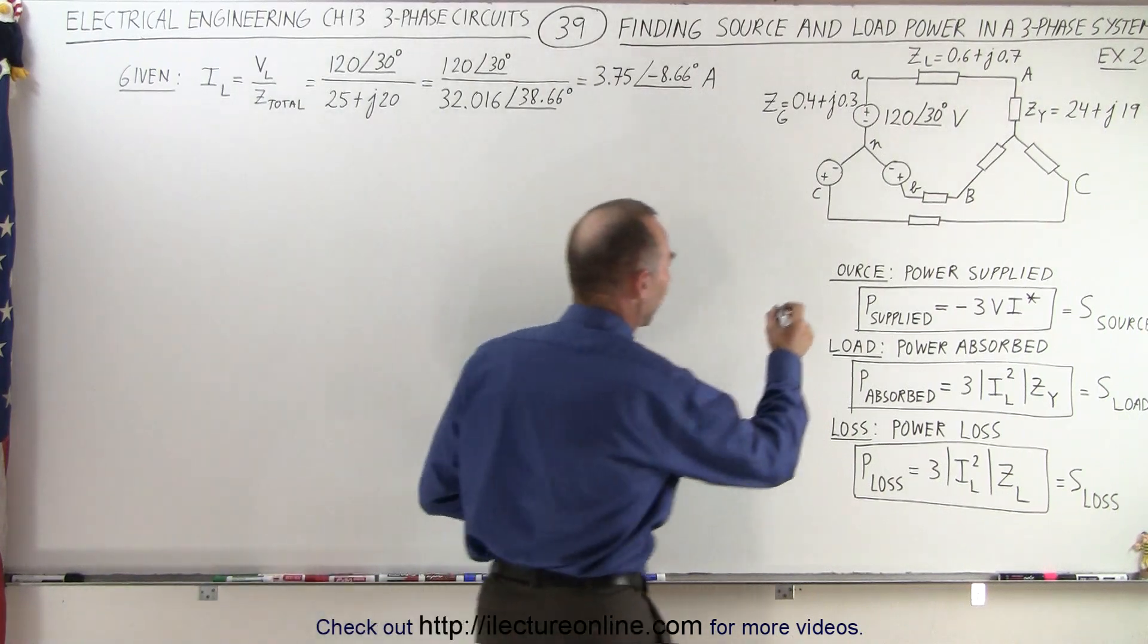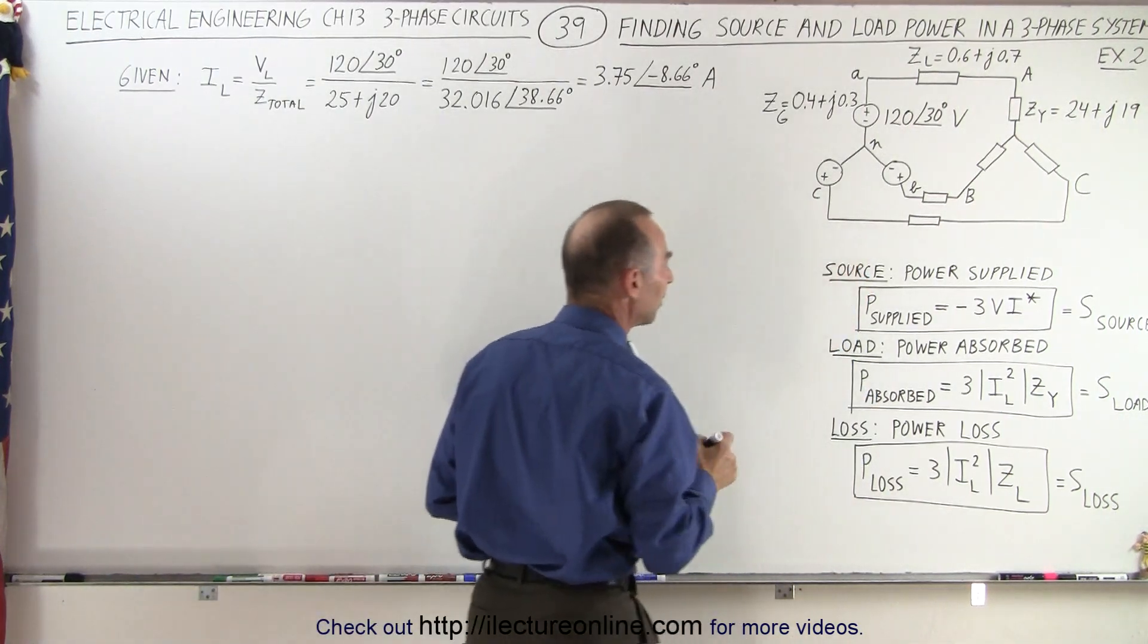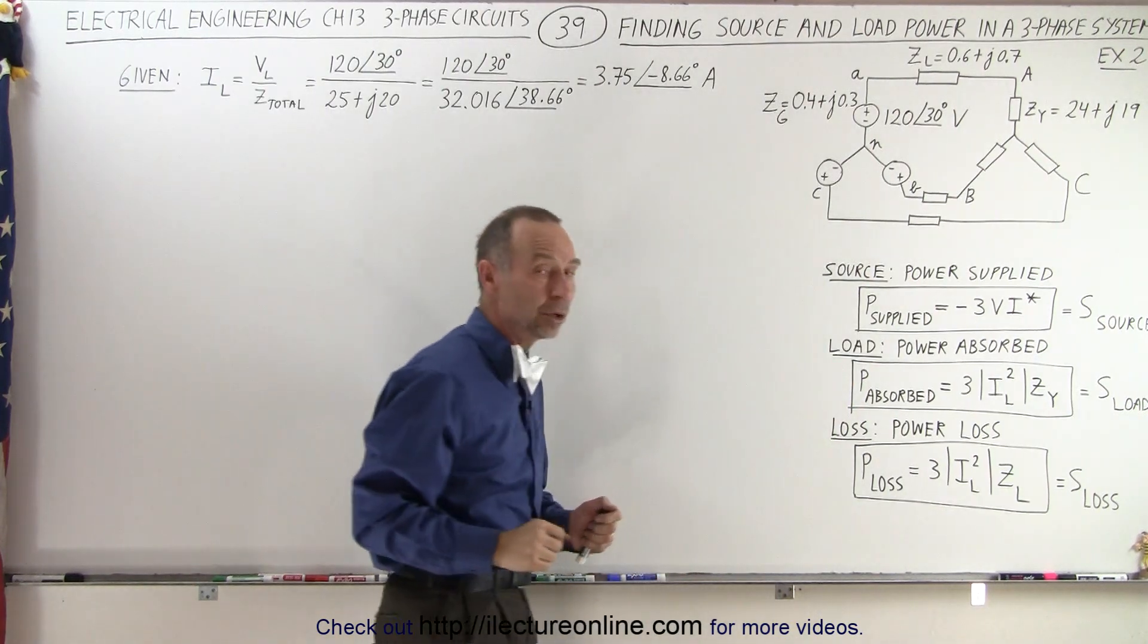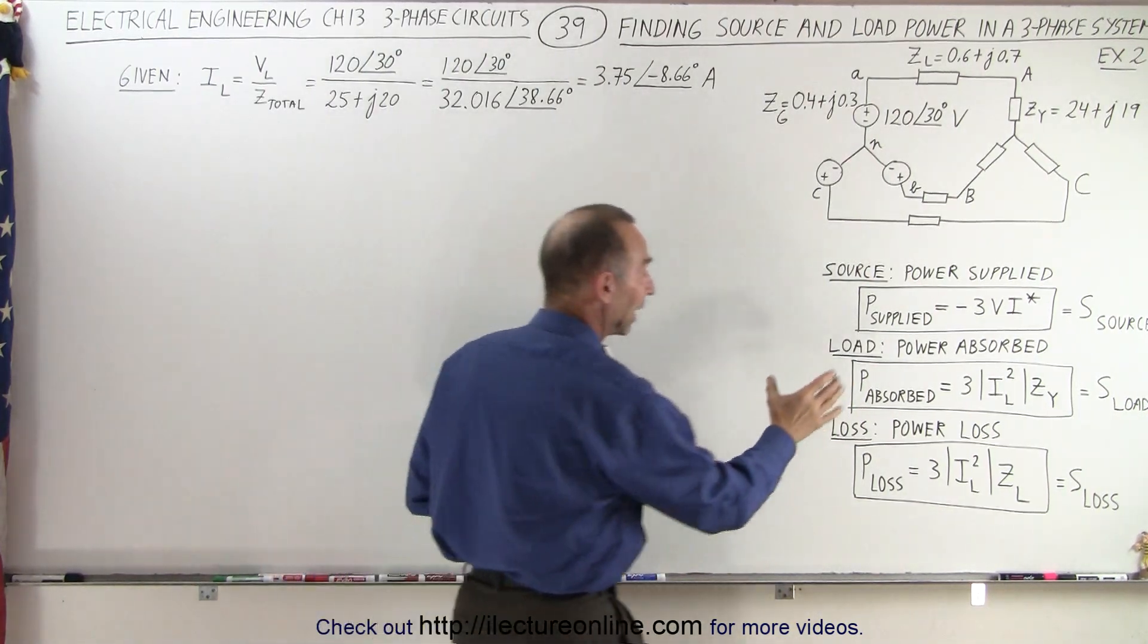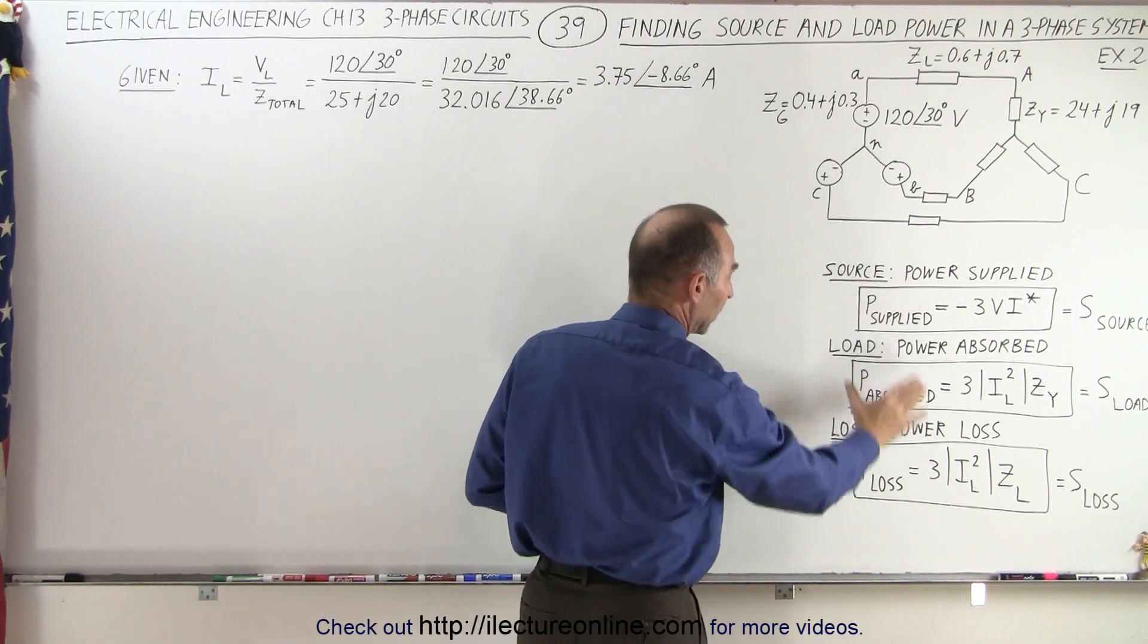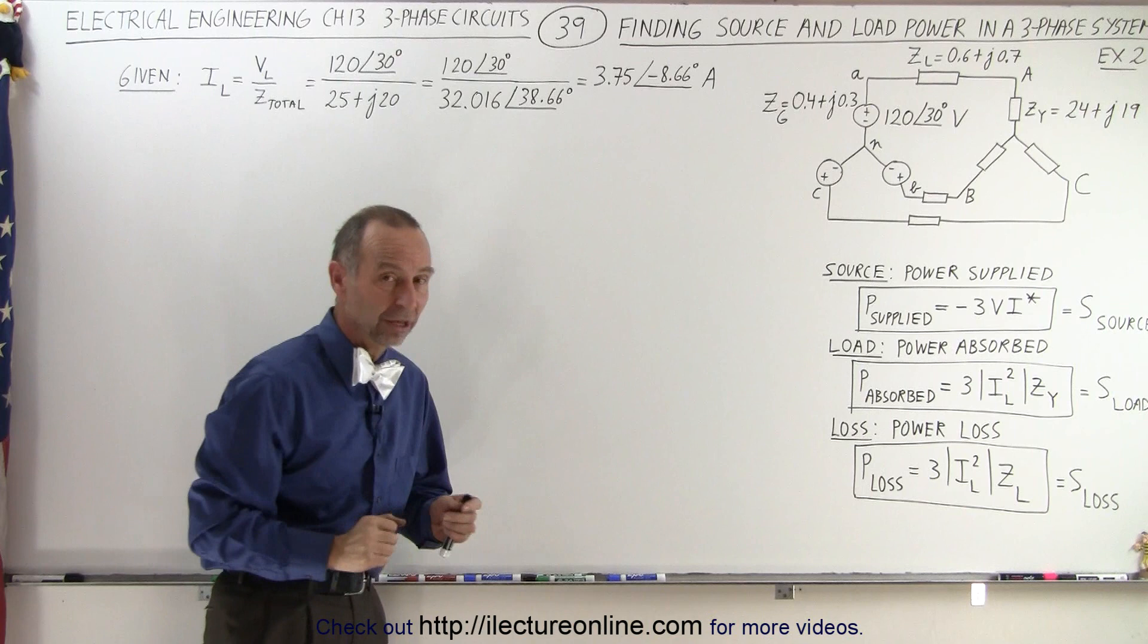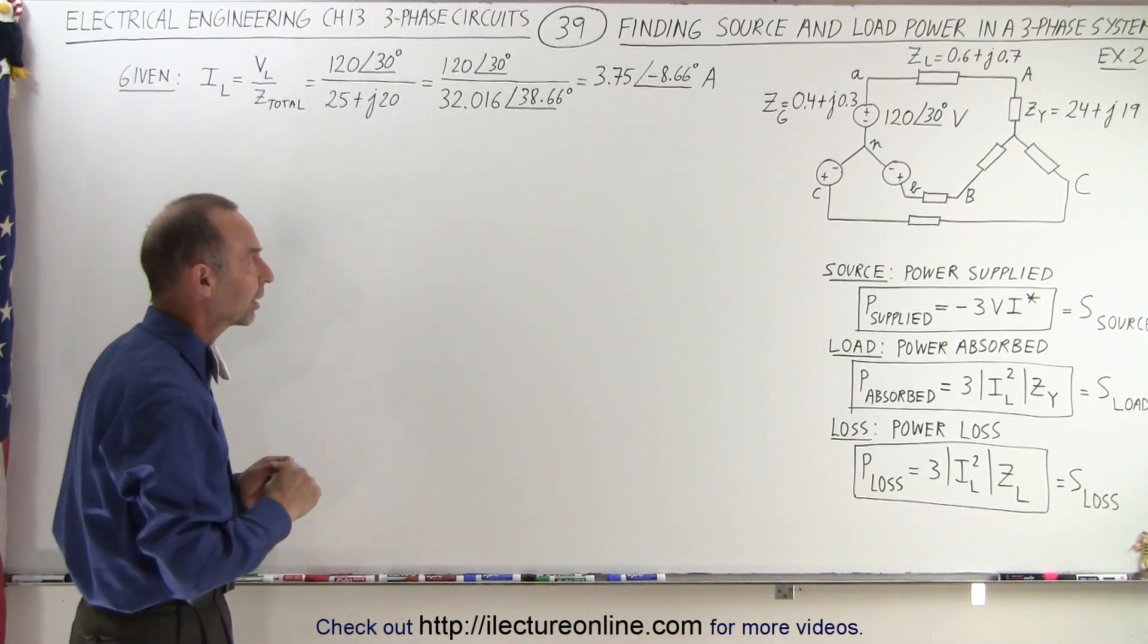The equations are exactly the same as before, but in this case we're only going to calculate the power supplied by the source and the power absorbed by the load. You'll see that there will be less power absorbed by the load because there will be some loss along the way and there's some loss in the generator as well, which we're not going to calculate separately.